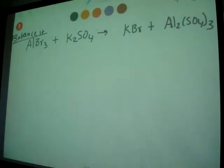Alright, so AlBr3 plus K2SO4 which gives KBr and Al2SO43. In this one you have SO4, SO4 contains... we take this whole cluster as one entity.